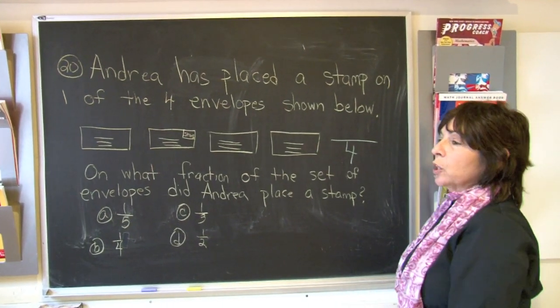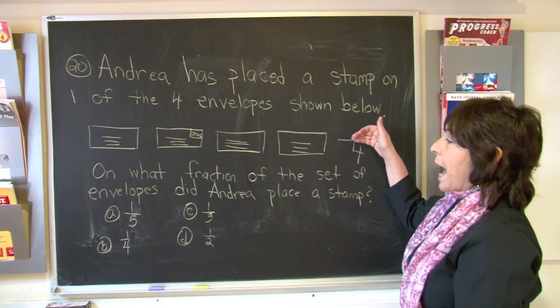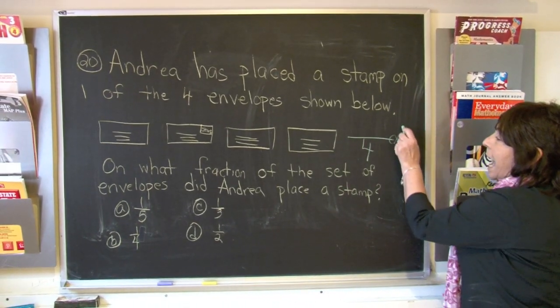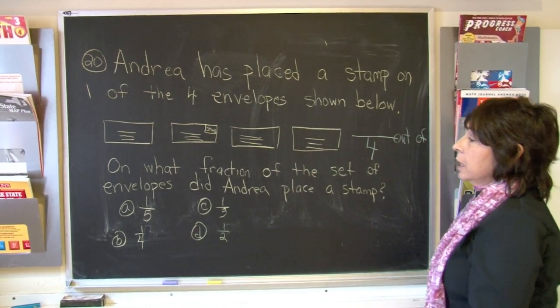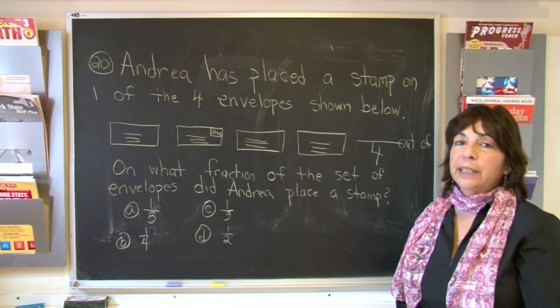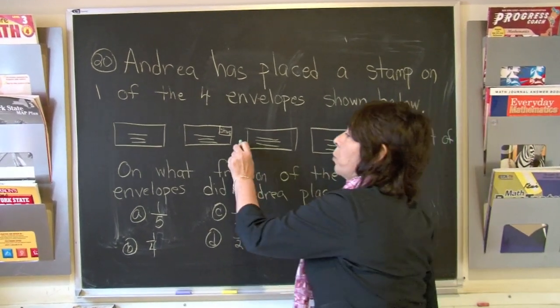Now we're looking for what number out of four. I always think that this line means out of how many out of four. So how many have a stamp? Boys and girls, this is really pretty easy. Only one envelope has a stamp.